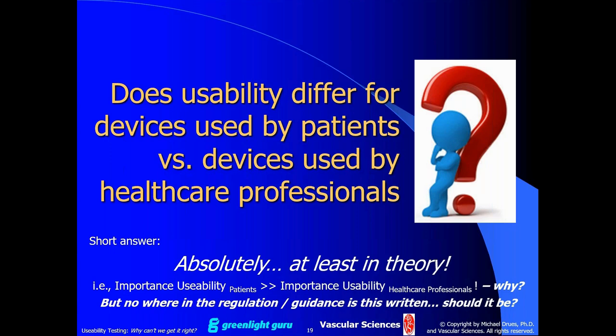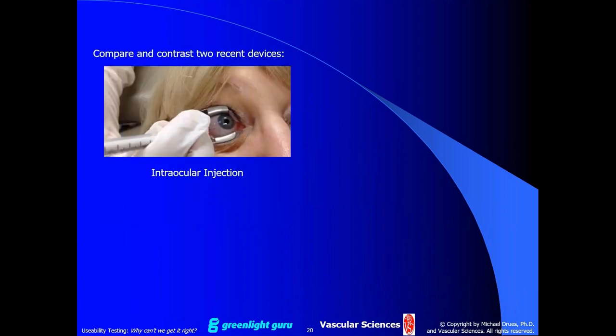However, ironic as it sounds, nowhere in the regulation or guidance is this written down. We don't usually distinguish when it comes to usability between devices used by a patient versus a healthcare professional. Should we? I would like to think we don't need that level of micromanagement — that those of us in this field know it already. But let me share two devices for a quick compare and contrast. On the left, a device indicated for intraocular injections — injecting a drug into somebody's eye. On the right, a saliva-based in vitro diagnostic — literally just spitting in a tube.